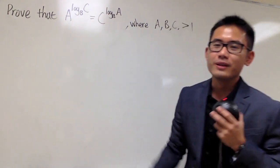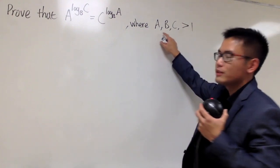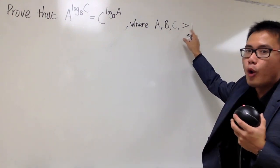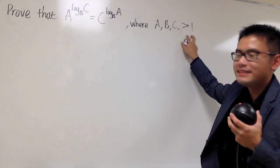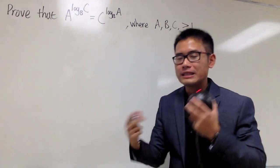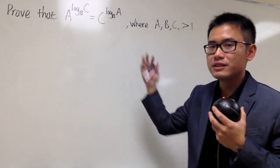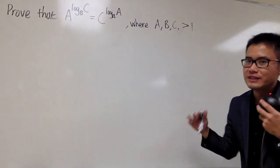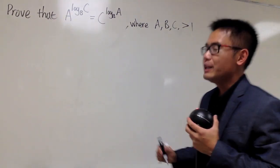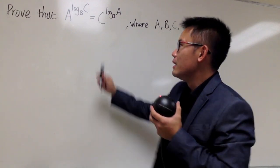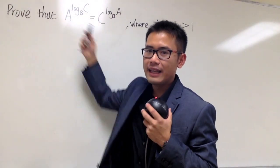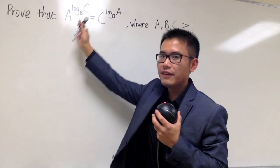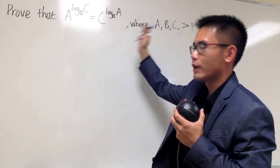And this is a really, really cool log property. Let me just state the conditions: A, B, and C are all bigger than 1. Even though you may have more possibilities for A, B, or C to make this work, let's just say they're all bigger than 1 for simplicity. This is how we are going to do it — start from the left-hand side, do all the computations, and show that the left-hand side is indeed the same as the right-hand side.